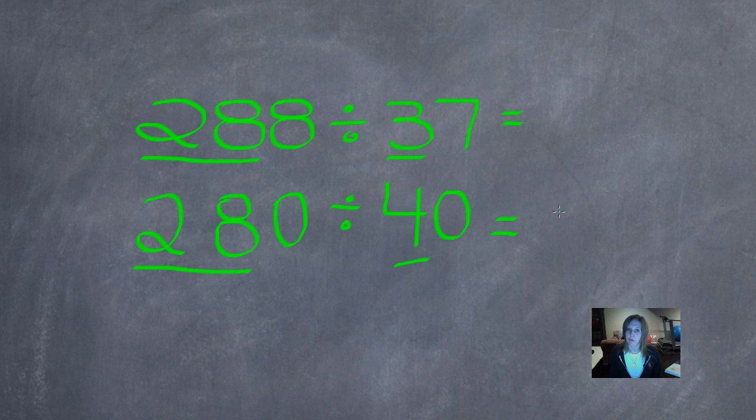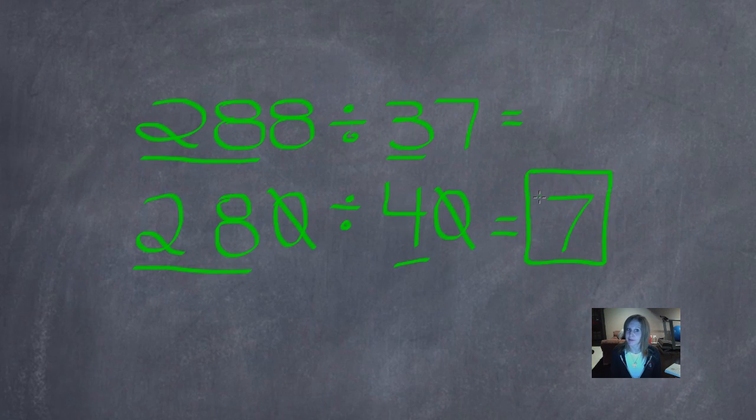28 divided by 4 is 7, and I have to do the battle of the zeros. This guy captures this guy. So this is my estimated answer, and it's a pretty good one.